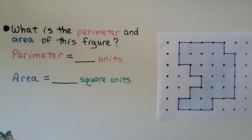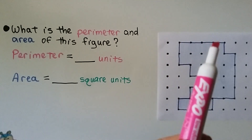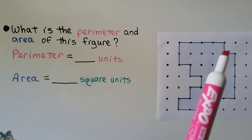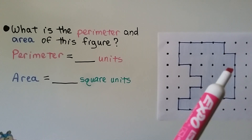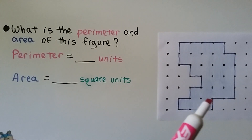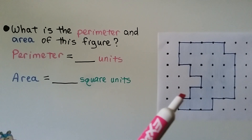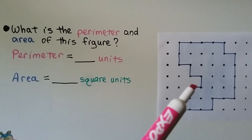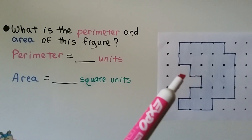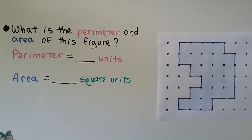Remember, perimeter goes around the outside. Counting the outside edges of this figure starting in the corner: one, two, three... twenty-six. I counted 26 units — the perimeter is equal to 26 units.